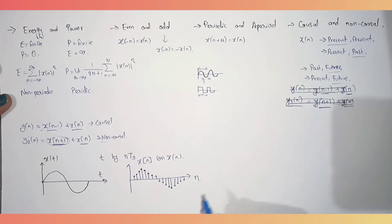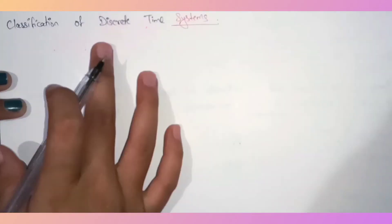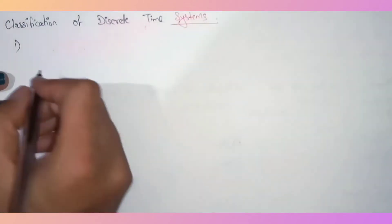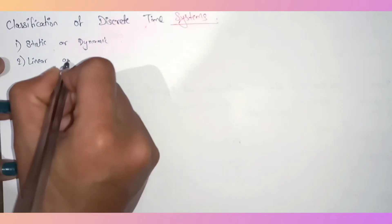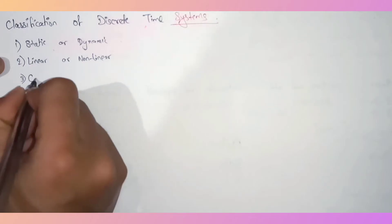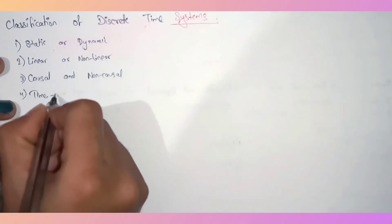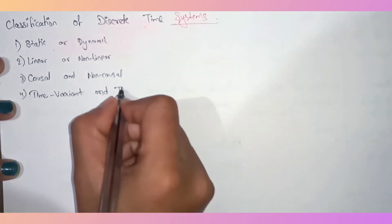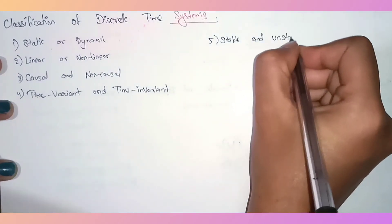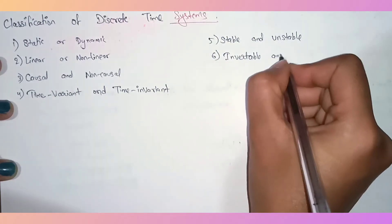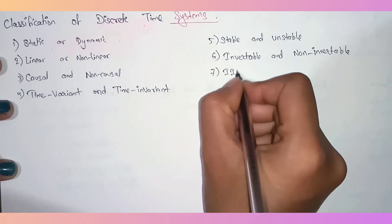Now let's discuss the classification of discrete time systems. The classifications are: static or dynamic, linear or non-linear, causal or non-causal, time variant or time invariant, stable or unstable, invertible or non-invertible, and IIR and FIR.